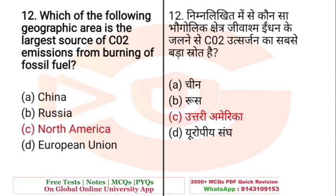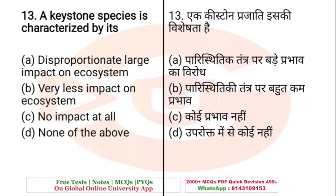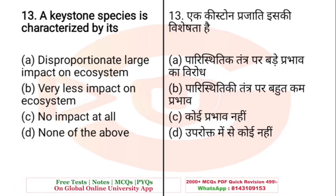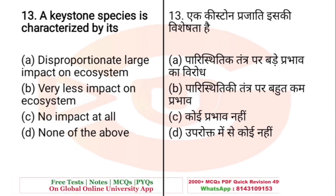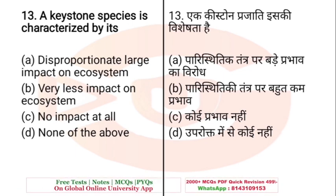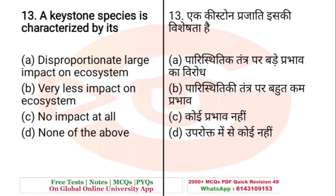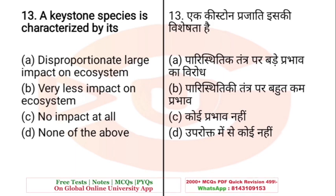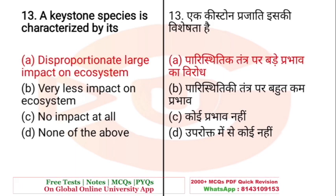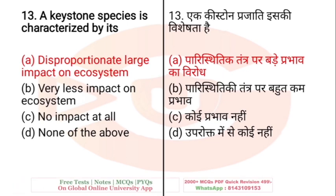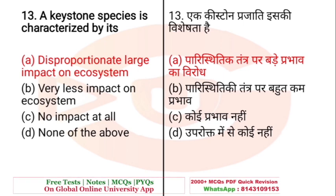Question: A keystone species is characterized by — A. Disproportionately large impact on ecosystem, B. Very less impact on ecosystem, C. No impact at all, D. None of the above. The right answer is A — disproportionately large impact on the ecosystem.